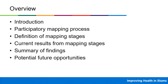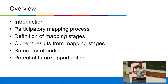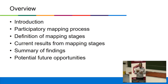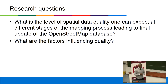As an overview, I'll highlight the research questions guiding this preliminary study, then talk about the ongoing project, the participatory mapping process, how we define the mapping stages, results from these defined stages, and some concluding remarks. The first research question is: what is the level of spatial data quality one can expect at different stages of the mapping process leading to the final update of the OSM database? And also, what are the factors likely to influence quality?